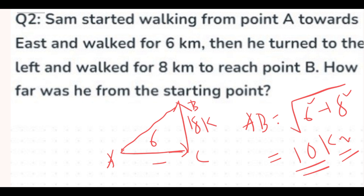Basically three to four types of questions appear: first, how far the person is from the starting point; second, in which direction they are currently facing; and third, shadow-based problems — such as the sun sets in the west and rises in the east, so in which direction will the shadow fall. There are also clock-based directional questions. All of these come under abstract reasoning.